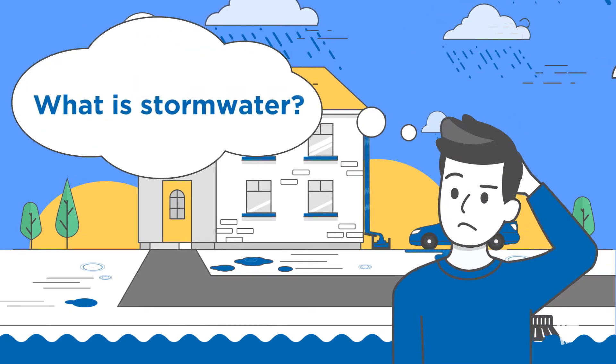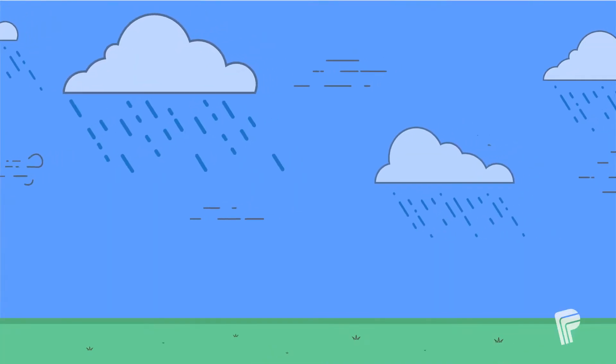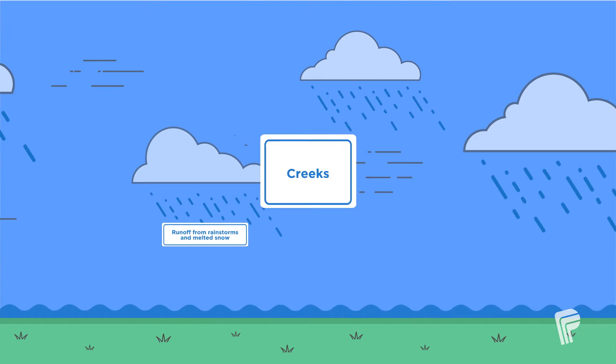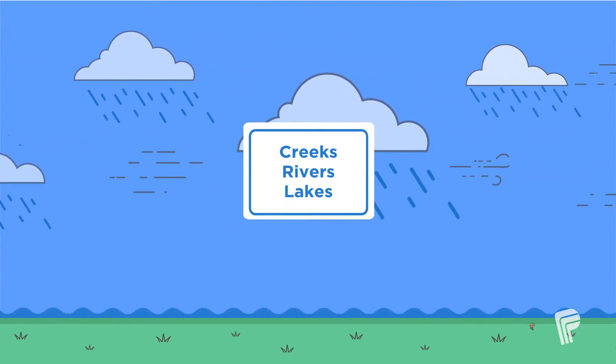So, what is stormwater and how can it affect you? Stormwater is the runoff from rainstorms and melted snow that flows into local creeks, rivers, and eventually the lakes around us.